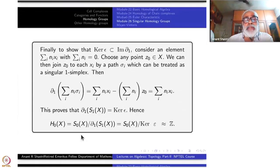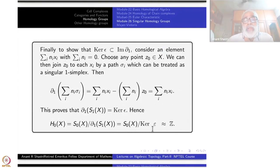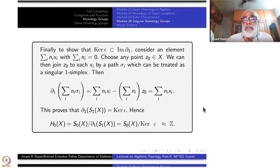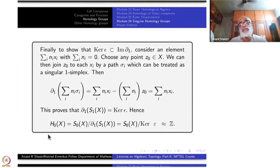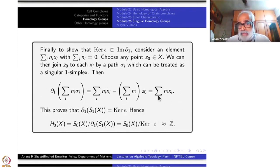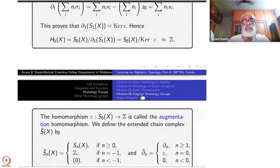By the first isomorphism theorem, H₀(X) = S₀(X) / Im(∂₁) = S₀(X) / ker(ε) ≅ ℤ, since ε is surjective. Thus for any path-connected space X, H₀(X) ≅ ℤ. Note that connectivity alone is not sufficient — you need path-connectedness; it is easy to give counterexamples otherwise.